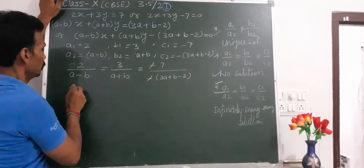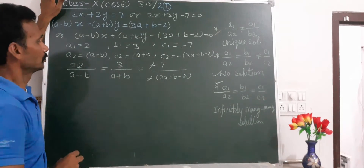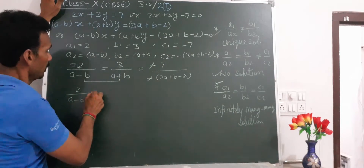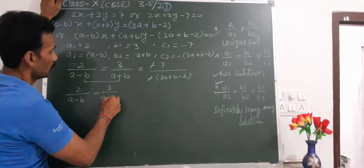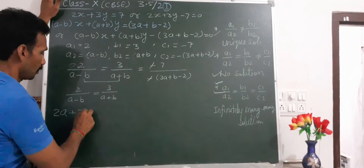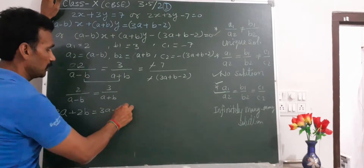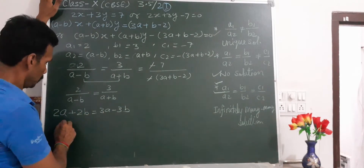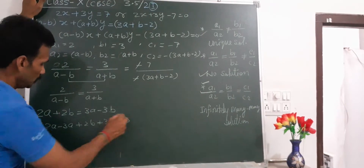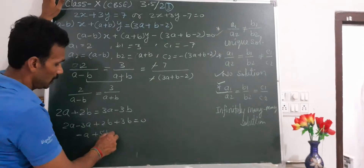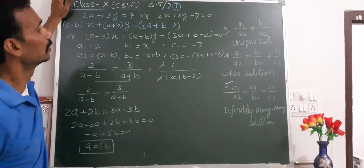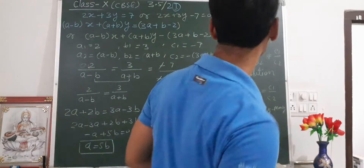Taking the first two ratios: 2 upon (A minus B) equals 3 upon (A plus B). Solving by cross multiplication: 2A plus 2B equals 3A minus 3B. Bringing A terms to one side: 2A minus 3A plus 2B plus 3B equals 0, giving minus A plus 5B equals 0, therefore A equals 5B. This is equation 1.